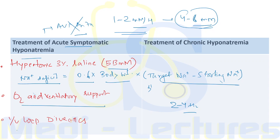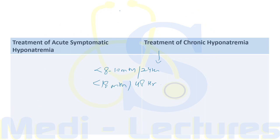IV loop diuretics are also important in acute symptomatic hyponatremia: they treat acute pulmonary edema and increase free water clearance by inhibiting the counter-current mechanism. For chronic hyponatremia, the rate of correction is typically less than 8–10 mmol per 24 hours and less than 18 mmol per 48 hours to avoid osmotic demyelination syndrome. Further lower correction targets are set for patients at risk of osmotic demyelination syndrome, such as alcoholics and those with hypokalemia.